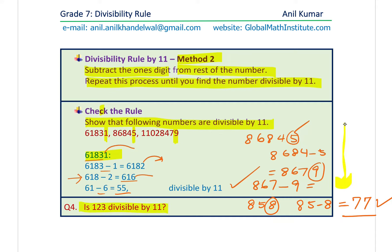Another question: Is 123 divisible by 11? If I take away 3 from 12, I get 12−3=9. Since 9 is not divisible by 11, the answer is no — 123 is not divisible by 11. Note that 121 is divisible by 11, but not 123.